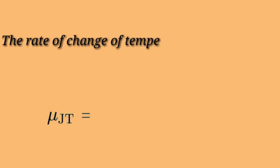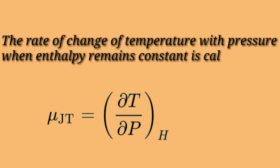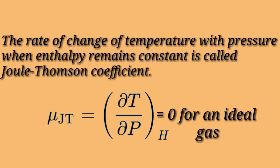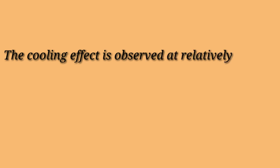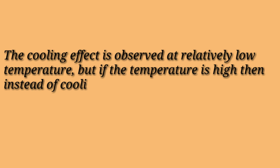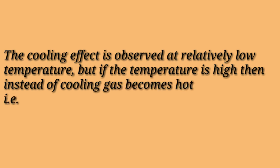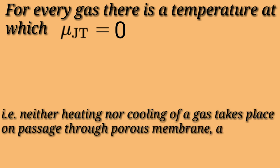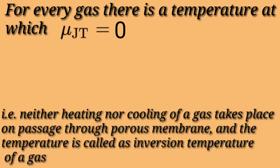The rate of change of temperature with pressure when enthalpy remains constant is called the Joule-Thomson coefficient. This is zero for an ideal gas but may be positive or negative for real gases. The cooling effect is observed at relatively low temperatures, but at high temperatures the gas becomes hot, meaning the Joule-Thomson coefficient is negative. For every gas there is a temperature at which the Joule-Thomson coefficient is zero — neither heating nor cooling occurs — and that temperature is called the inversion temperature of the gas.